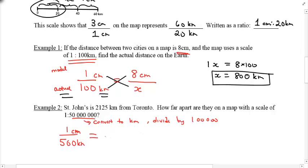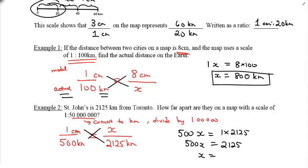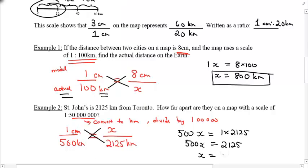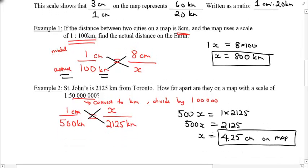So therefore, if I were to say now, I want to find out how far apart are they on the map, that means I want the model number, and I have the real life number, 2,125 kilometers. Once again, I'm going to ask you to solve by cross multiplying. So 500x equals 1 times 2,125. 2,125 equals to 500x. I must divide both sides by 500. How about 4.25, and that would be centimeters on the map. So 2,125 kilometers on this particular map would be 4.25 centimeters away.